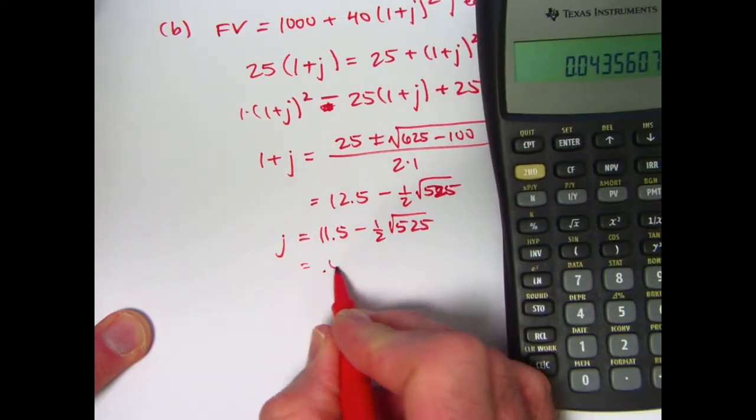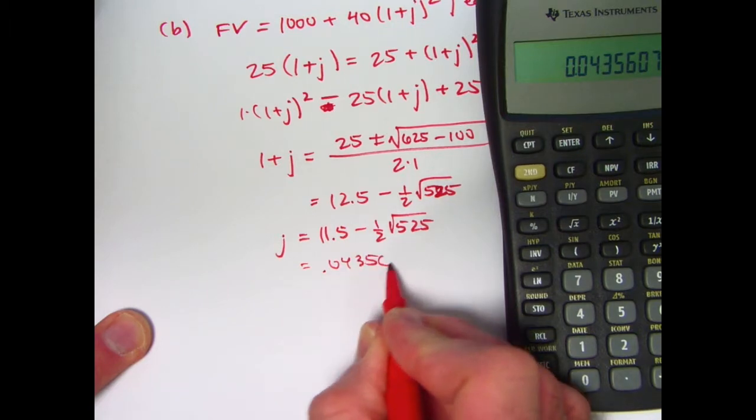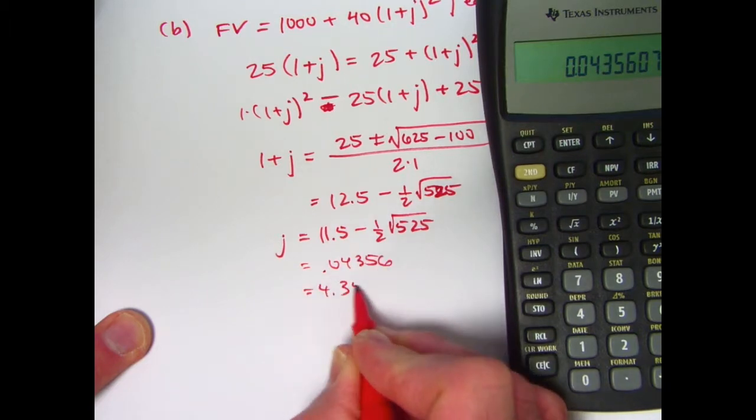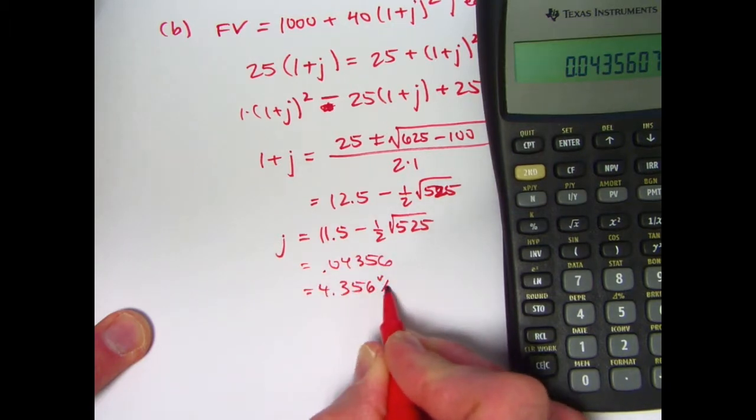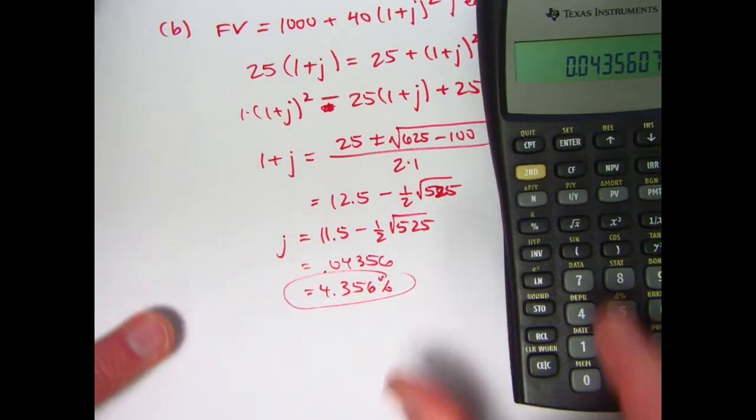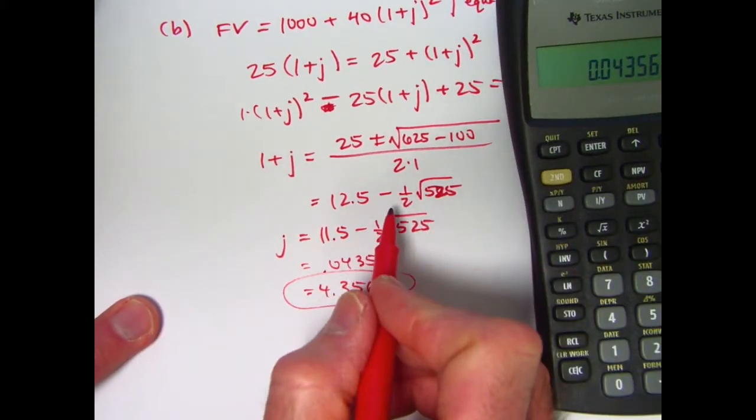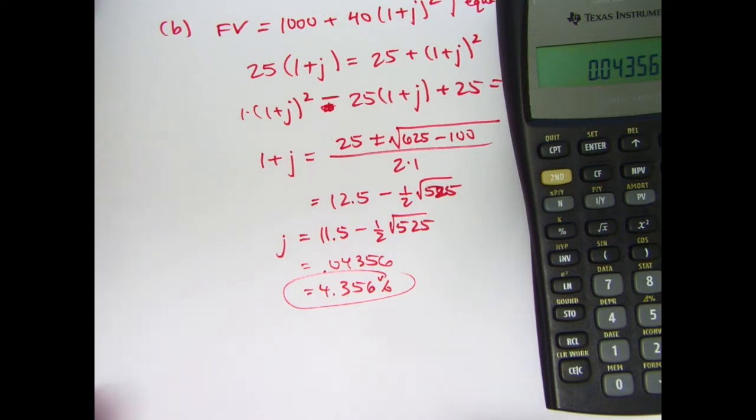J is 0.04356. As a percent, that's 4.356 percent for the answer and that is correct. If we did use the plus sign here, definitely J would be too big. It would not be less than 10 percent. So that's the answer to this question.